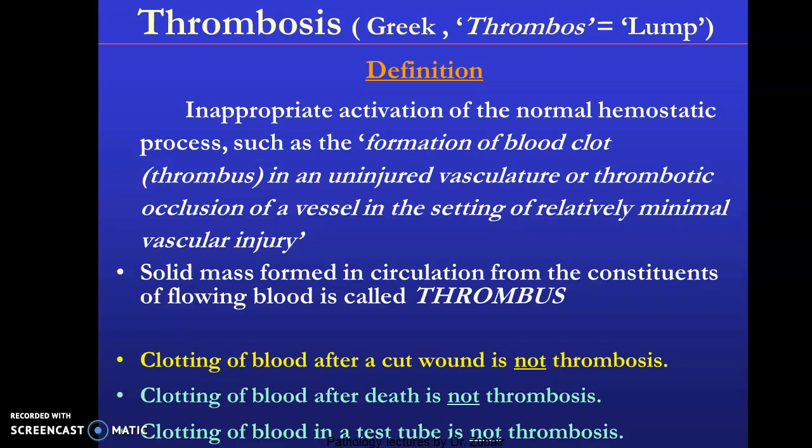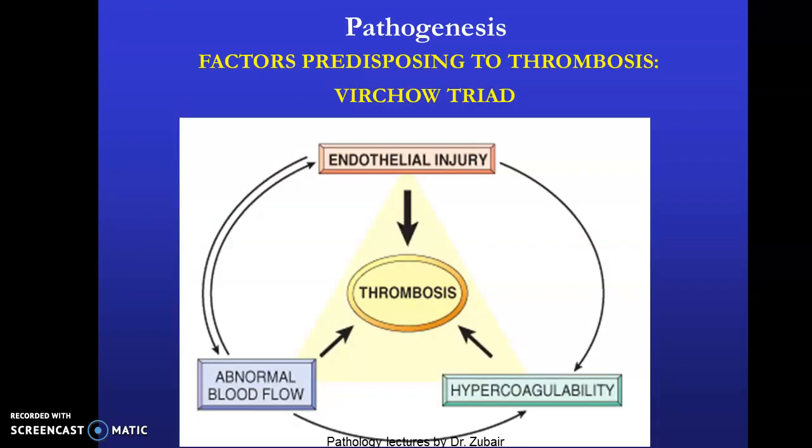Normally, a blood clot forms when there is vessel injury. In thrombosis, that is not the case — the vessel is not injured, or the injury may be very minimal. The solid mass formed in circulation from the constituents of flowing blood is called a thrombus. Note that clotting of blood after a cut wound, clotting after death, and clotting of blood in a test tube are not thrombosis.